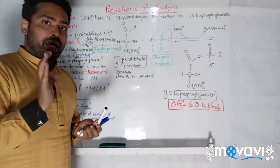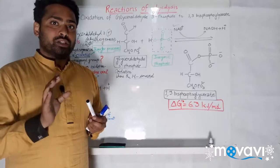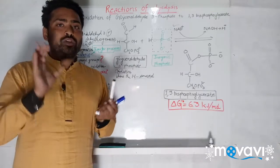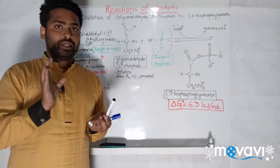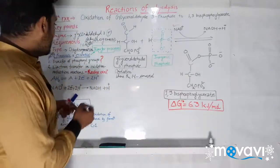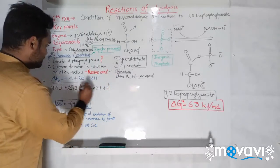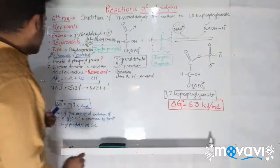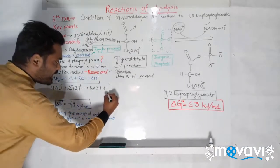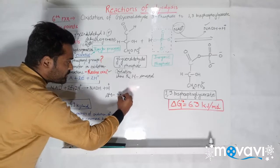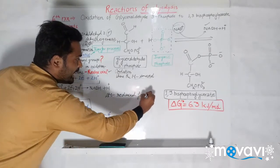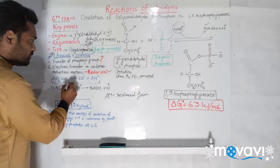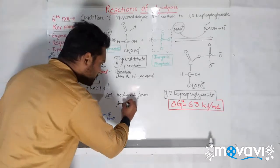The transfer of electrons means electrons are transferred from one molecule to another, and that is known as a redox reaction. In a redox reaction, one molecule releases electrons and another molecule gains those electrons. Here, AH₂ is in reduced form; when AH₂ releases its electrons it becomes A, which is the oxidized form.